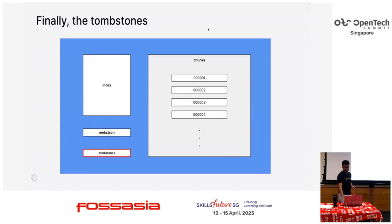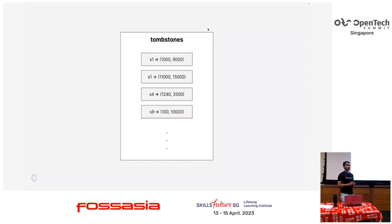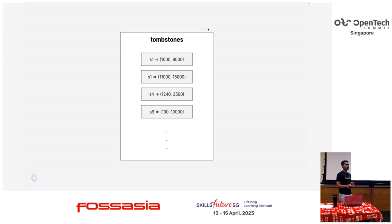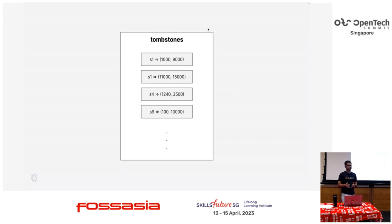Finally, we come to tombstones. Tombstones are there to record the deletions that you make on a block. Because the blocks are immutable, if you have to delete data and series, you have to recalculate the entire index because all the offsets and everything is calculated based on byte offset — that is very inefficient. So when you get a deletion request, you see which series it affects and what time range the deletion is asked for, and you just record it in a file called tombstones, which says for this series reference, this time range is deleted. This is usually small, so we do not really optimize stuff here. Whenever you are querying and looking at the chunks, you also cross-verify with tombstones and only return the data that does not overlap with these tombstones.